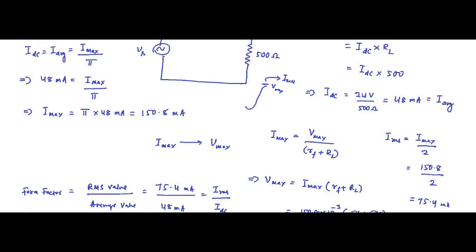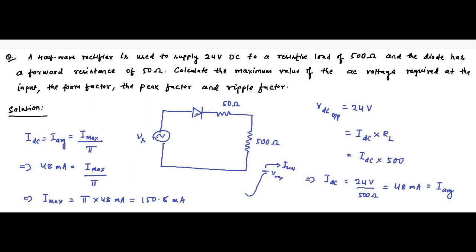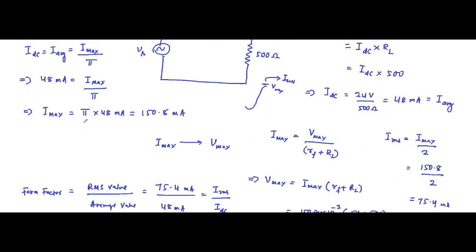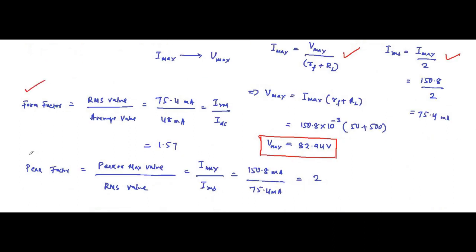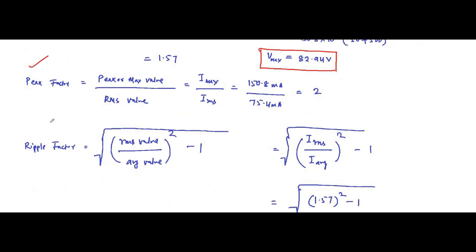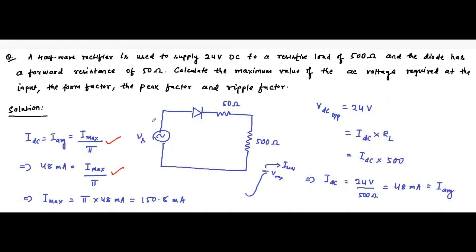The important thing, as repeated in previous questions, is to remember the basic formulas: the average value, the RMS value, the maximum value of current (Vmax divided by RF plus RL), and then the formulas for form factor, peak factor, and ripple factor — because they are all interrelated. Once you get one parameter, you can determine all the others simply by applying the formulas. This concludes the question on half wave rectifier circuit and the various parameters associated with it.